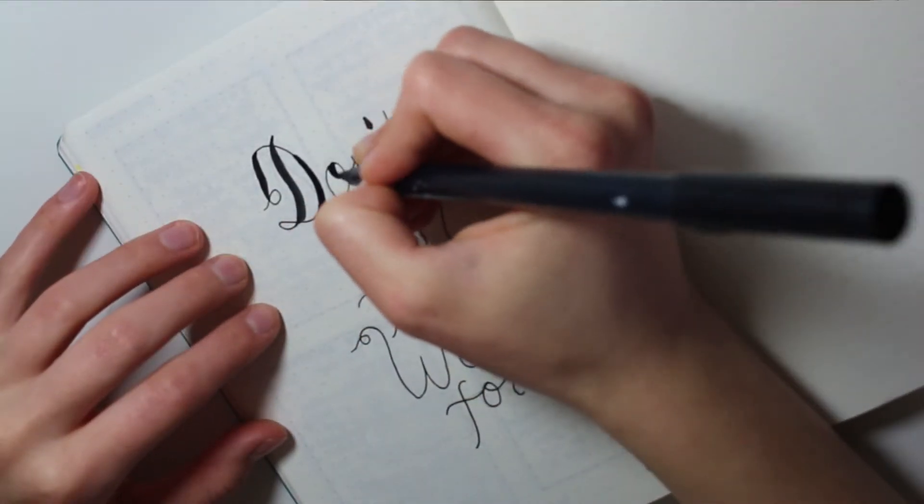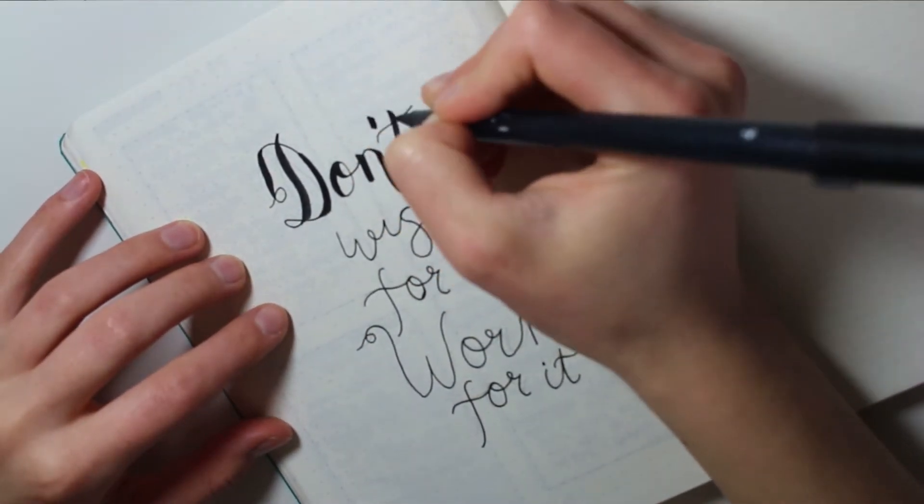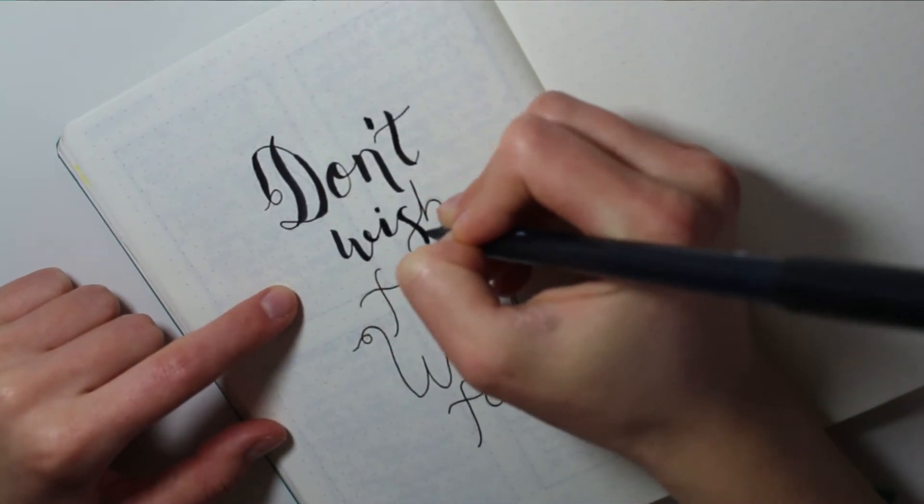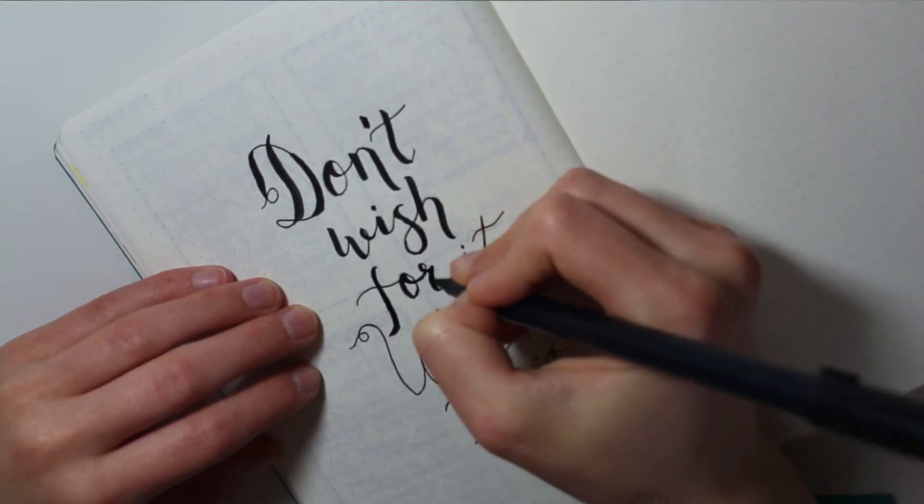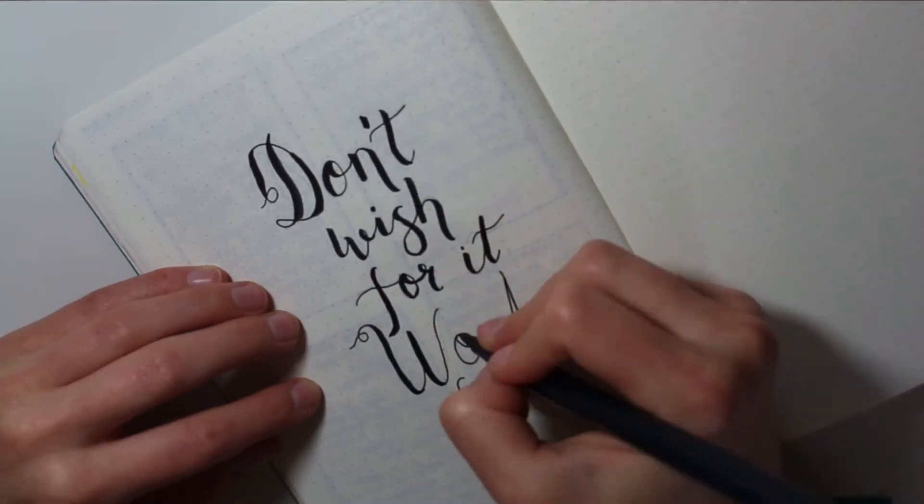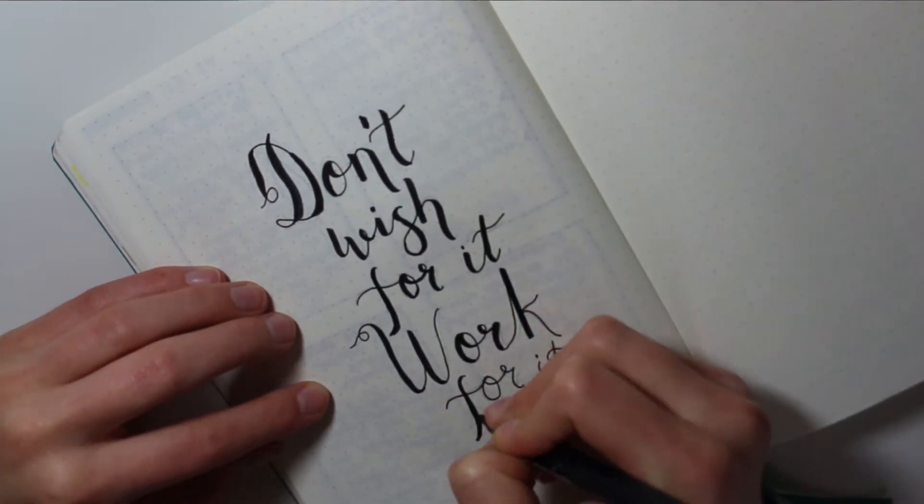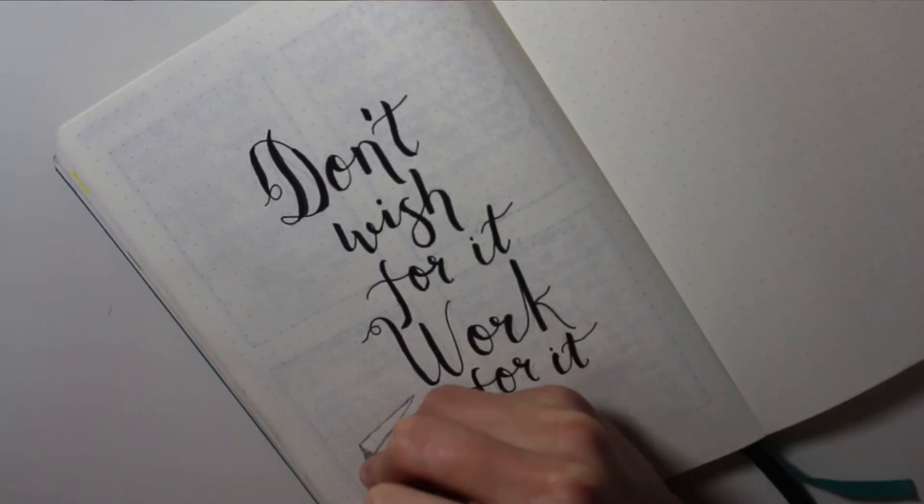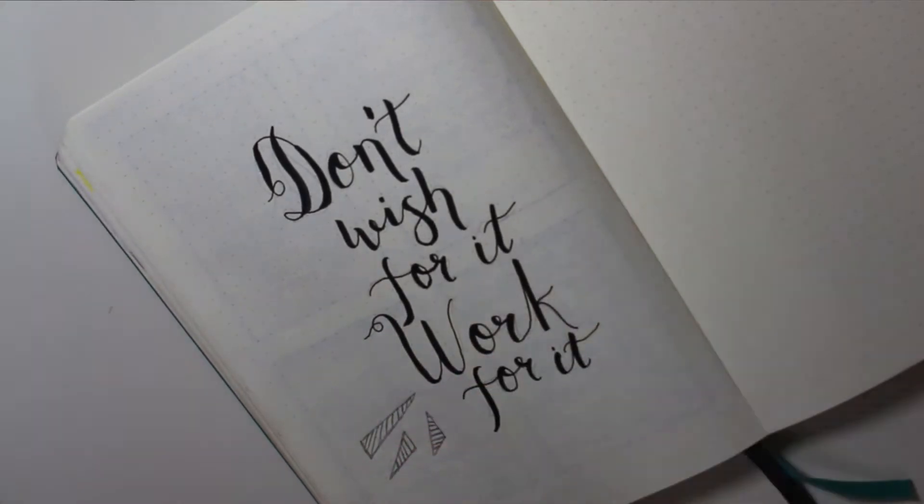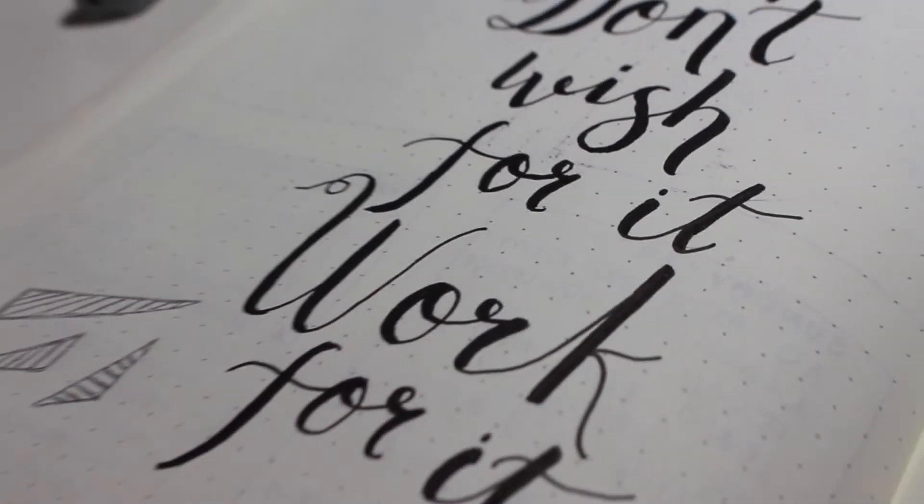And then I'm using my Tombow brush dual pen to do this. I use the small side to outline it and then the big side to do the down strokes. And then I'm just using a silver gel pen just to make these little triangular shapes on the side.